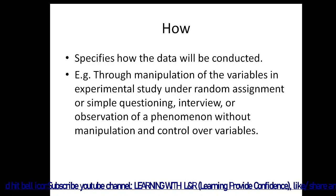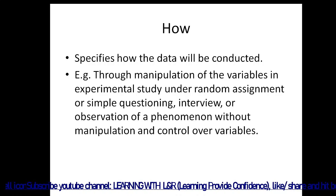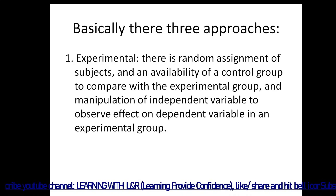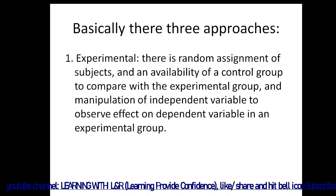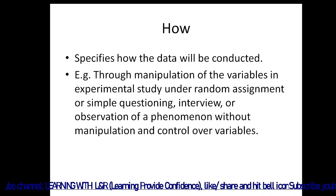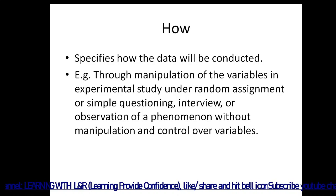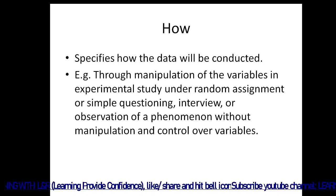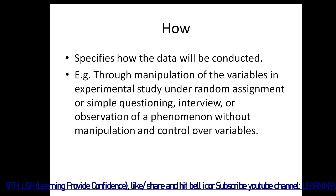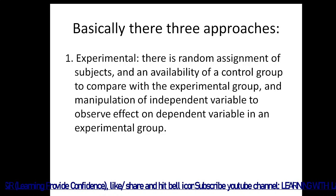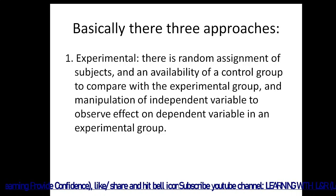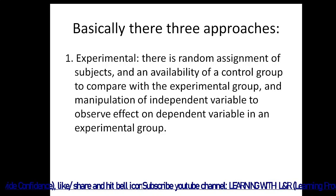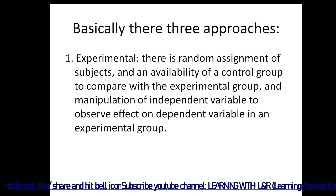'How' specifies how the data will be collected — through manipulation of variables in an experimental study, random assignment, questioning, interview, or observation without manipulation. There are three research approaches. The first is experimental, which involves random assignment of subjects, a control group to compare with the experimental group, and manipulation of the independent variable to observe its effect on the dependent variable.